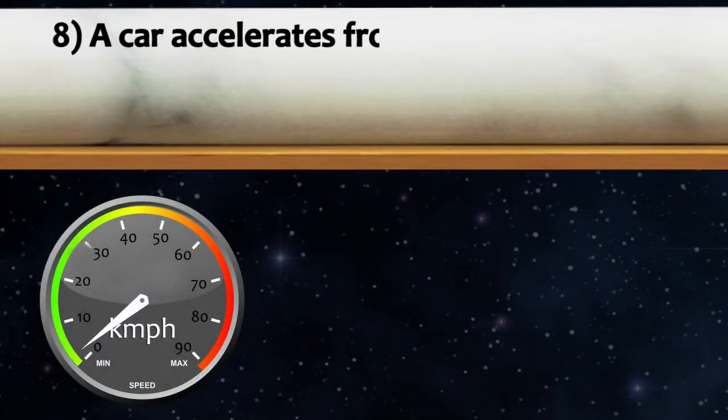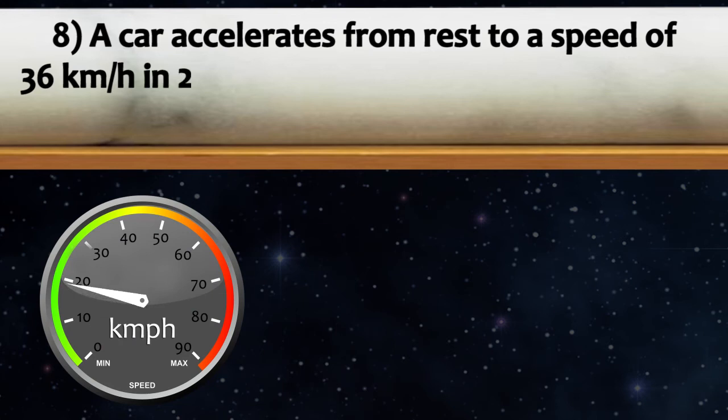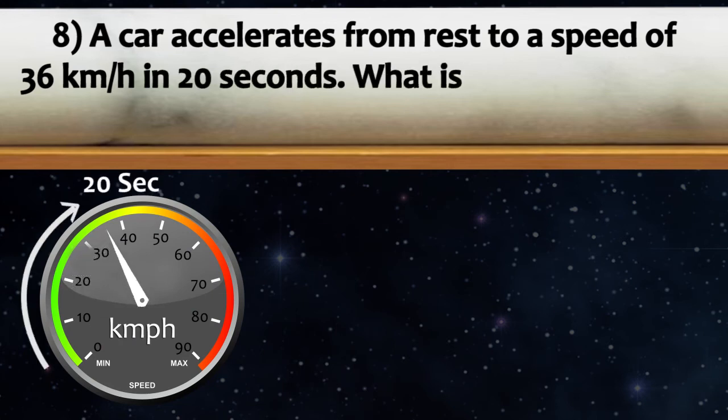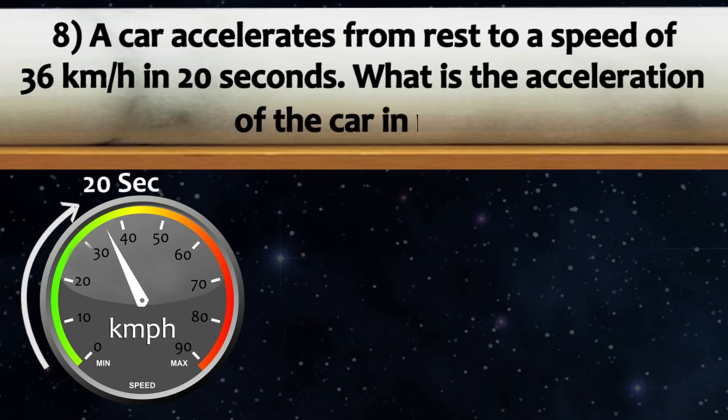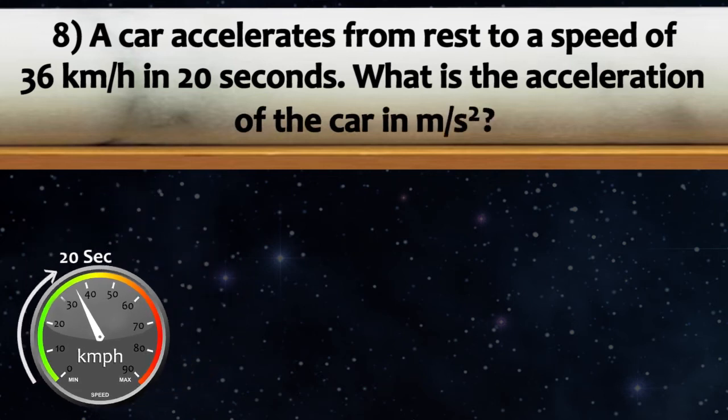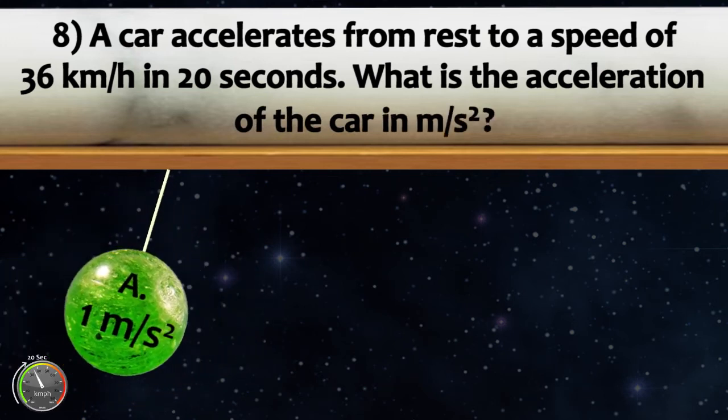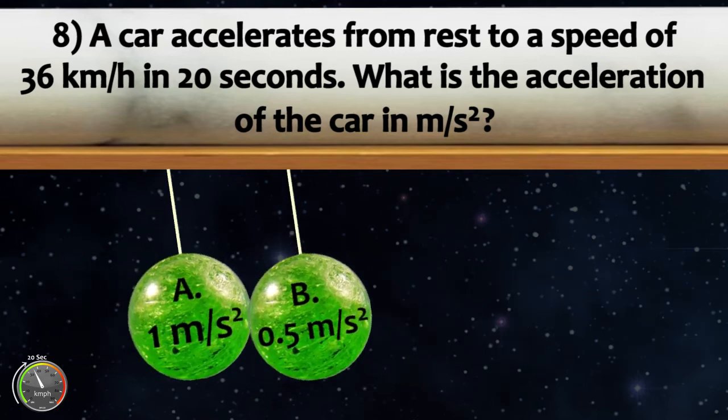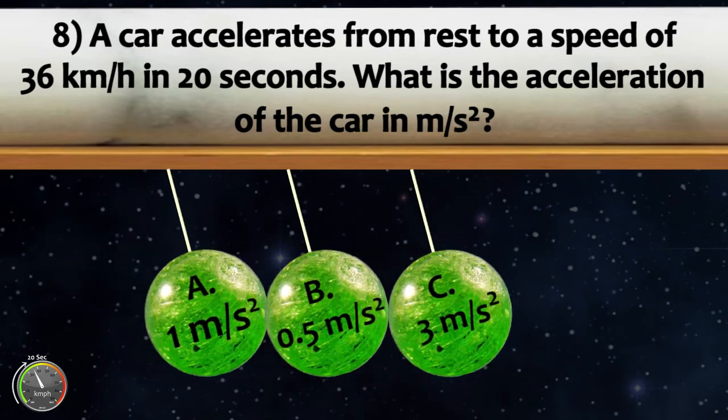A car accelerates from rest to a speed of 36 kilometers per hour in 20 seconds. What is the acceleration of the car in meters per second squared? 1 meter per second squared, 0.5 meters per second squared, 3 meters per second squared.